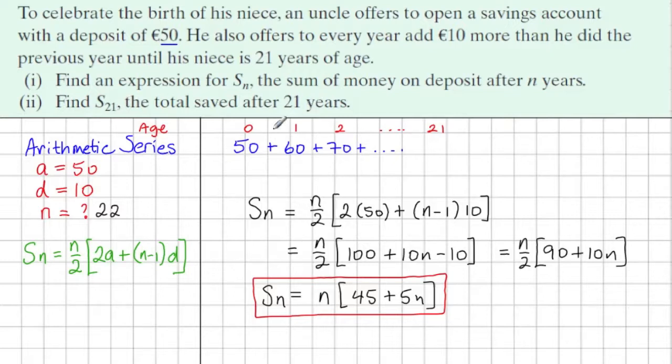In the second part of the question, it wants the total saved after 21 years. Now in the question, it says find the sum of 21. I don't agree with that. I think there's 22 terms here. So I'm going to find the sum of 22. That will be the total saved after 21 years. So the sum of the first 22 terms.